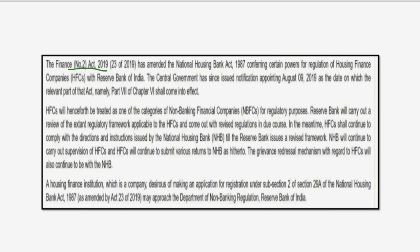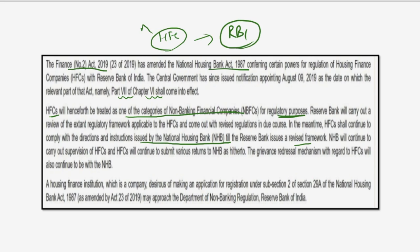The Finance Act 2019 (No. 2) has amended the NHB Act 1987. You can verify this in Part 7 of Chapter 6 of Finance Act 2019. The key amendment is that HFCs — housing finance companies — will now be treated as one of the categories of NBFCs for regulatory purposes. Until RBI comes up with a revised framework, HFCs shall continue to comply with the directions and instructions issued by NHB. So now HFCs will come under the regulation of RBI, whereas earlier they were under NHB.